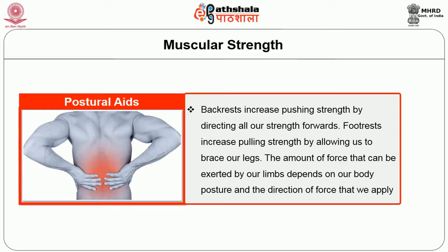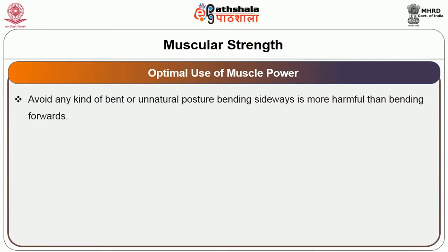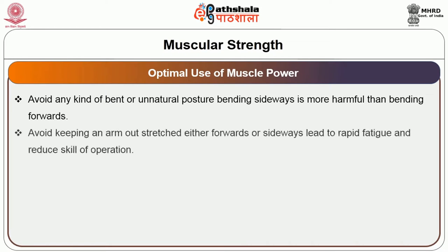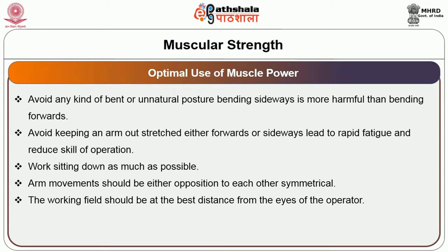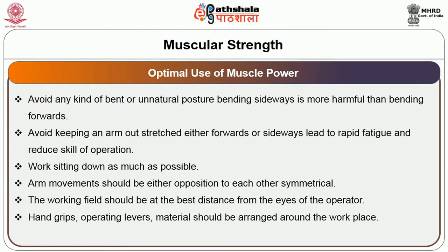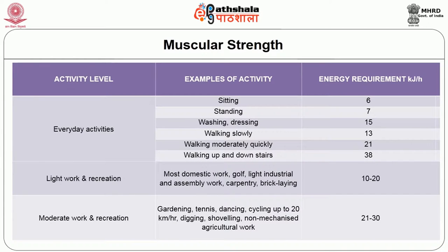For optimal use of muscle power, seven guidelines should be followed: avoid bending or unnatural postures — bending sideways is more harmful than bending forward; avoid keeping arms stretched forwards or sideways, which leads to rapid fatigue and reduced skill; work sitting down as much as possible; arm movements should be in opposition to each other or symmetrical; the working field should be at the best distance from the operator's eyes; hand grips, levers, and materials should be arranged around the workplace; and hand work can be aided by supports under the elbows, forearms, or hands.